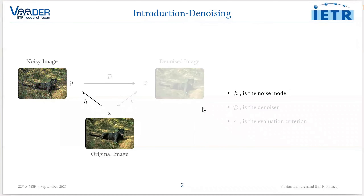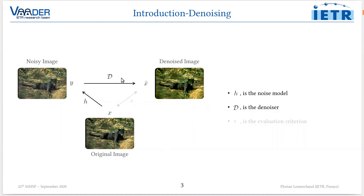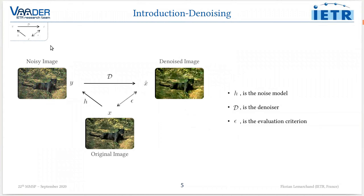Here are some notations I will be using in the following presentation. Let H be a noise model that corrupts an image X, referred to as the original or reference image. We obtain a noisy image that we want to denoise using a denoiser D. We obtain an approximated image X-hat, and finally we evaluate the denoising with Epsilon, an evaluation criterion. Throughout the presentation, you can follow which of these three components — H, D, and Epsilon — we are discussing using the schematic shown.